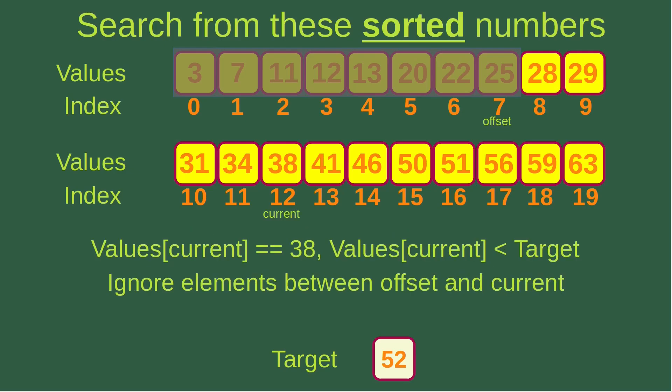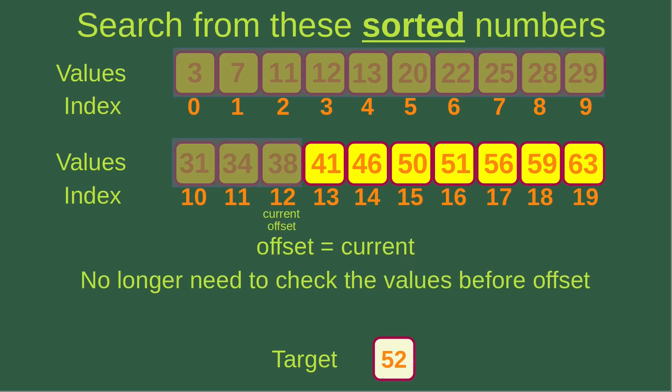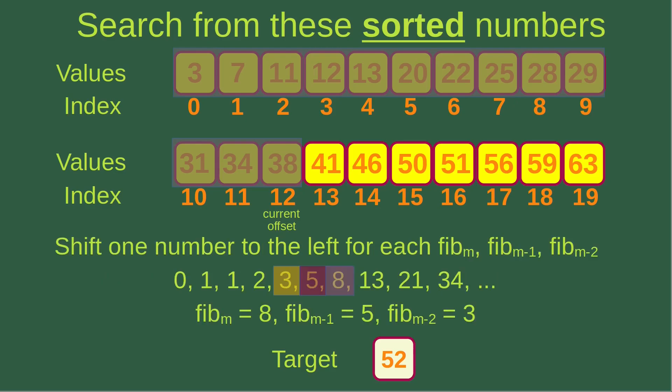The current index gives me a value of 38, which is smaller than the target 52. I ignore elements between offset and current by assigning the current index to the offset index, graying out more numbers. I go to the next iteration, shifting one number to the left: Fibonacci M is 8, Fibonacci M-1 is 5, and Fibonacci M-2 is 3.